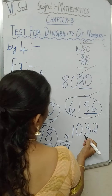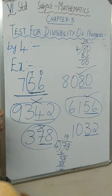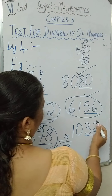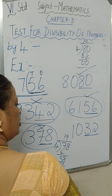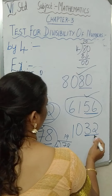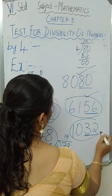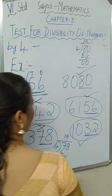Now look at 1032. The last two digits are 32. Is 32 a multiple of 4? Yes, of course it is a multiple of 4. So 1032 is divisible by 4. Hope that is clear.